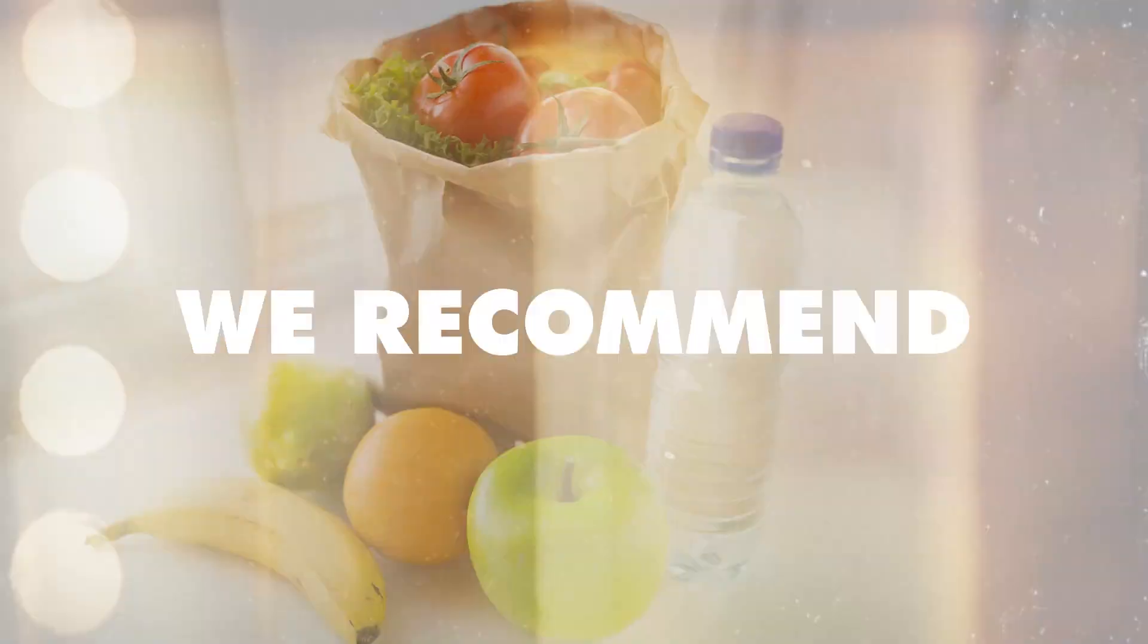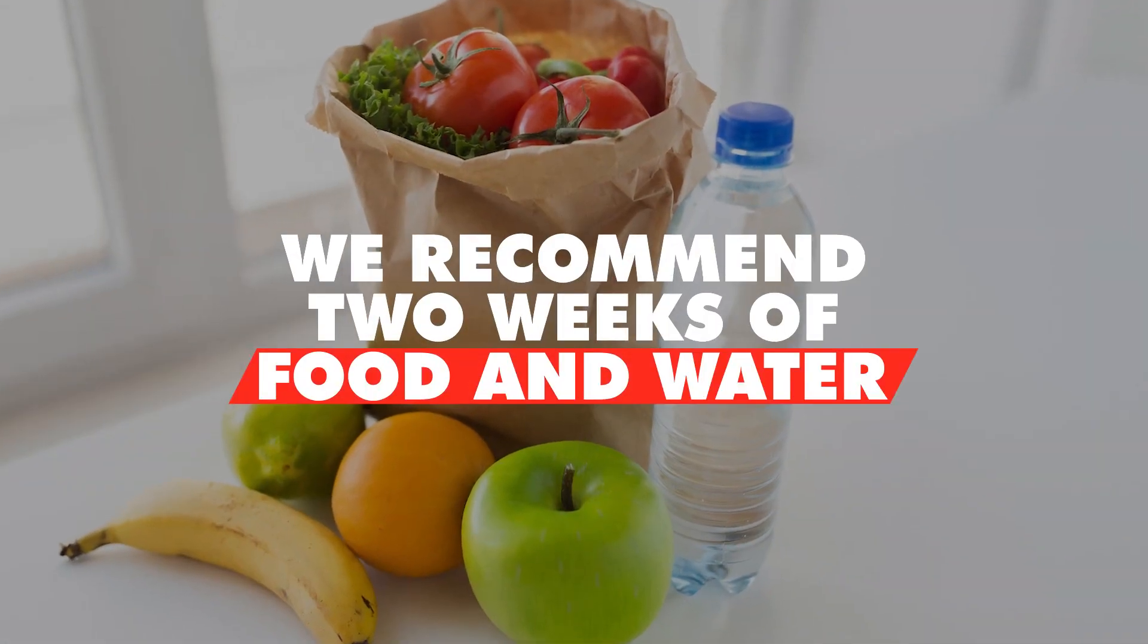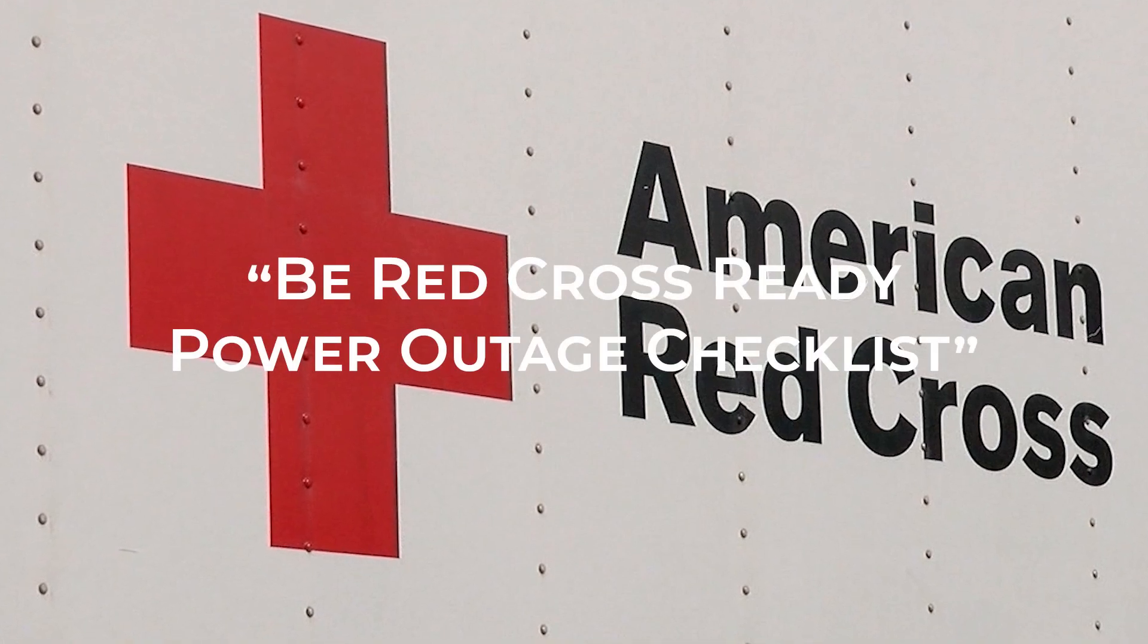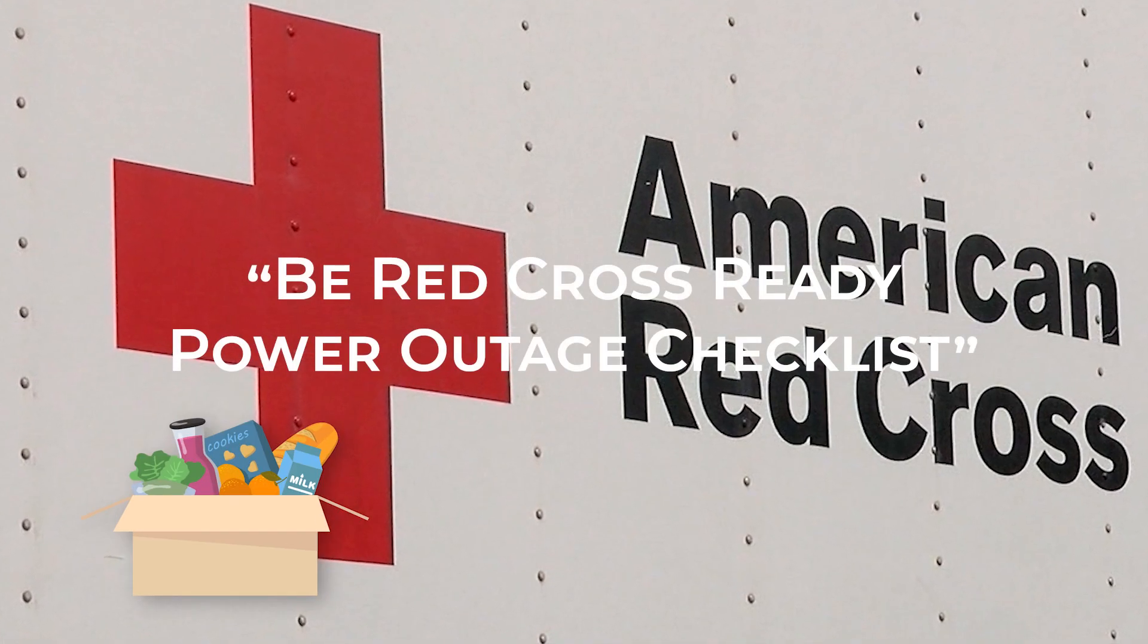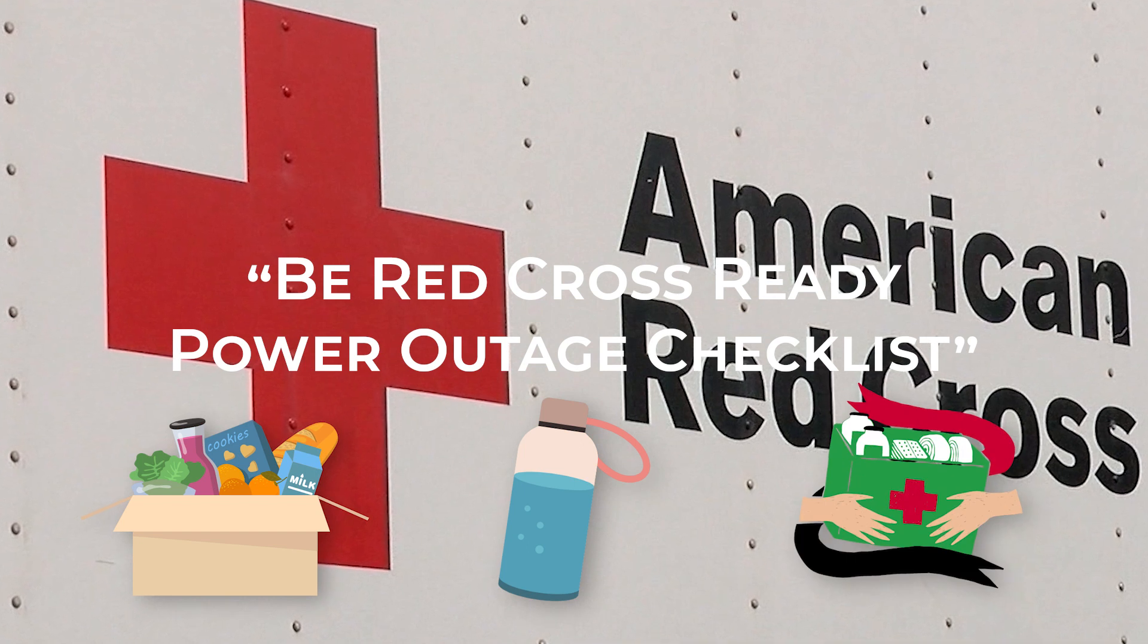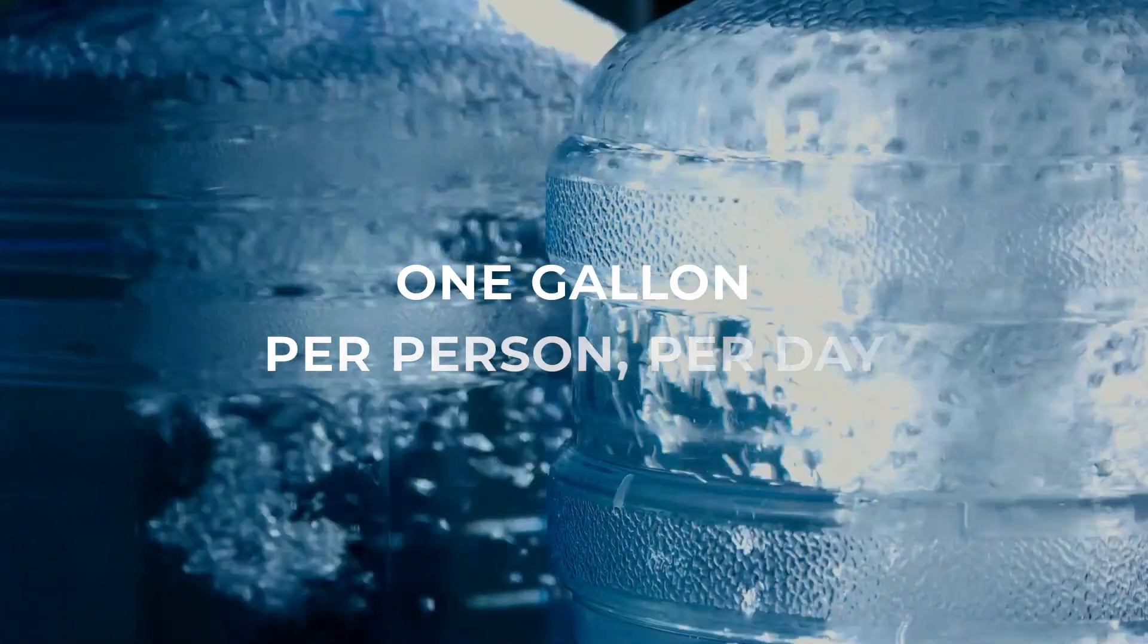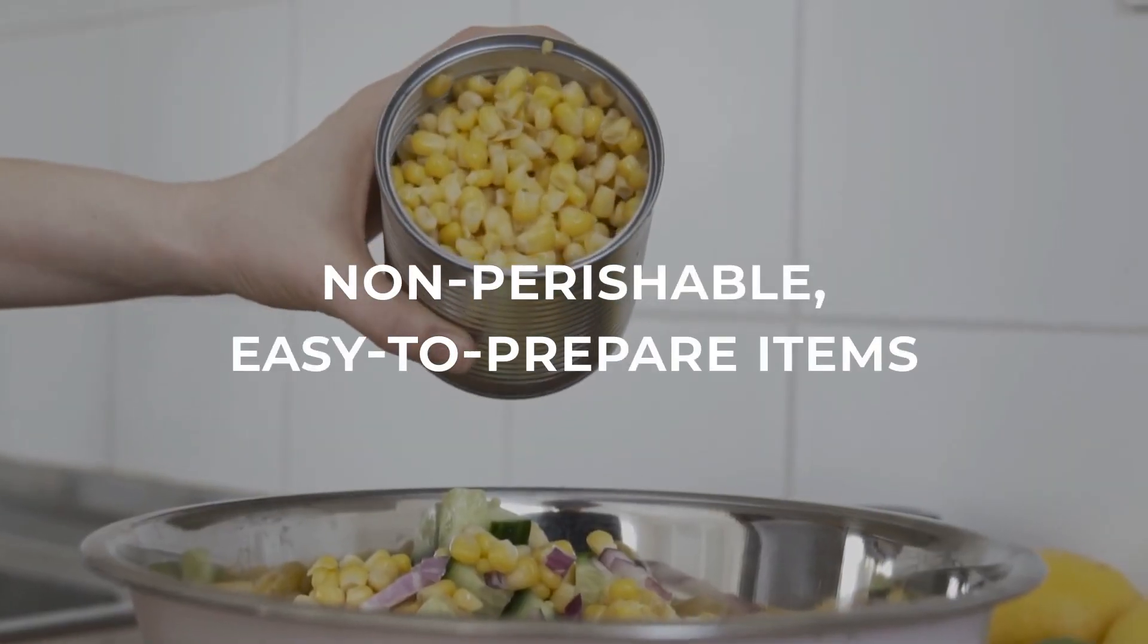Keep your vehicle's gas tank full. Local maps, whistle. We recommend two weeks of food and water. The Red Cross has a Be Red Cross Ready Power Outage Checklist that recommends preparing for a two-week supply of food, water, and essential supplies for your home for long-term power outages. Water: one gallon per person, per day. Food: non-perishable, easy-to-prepare items.